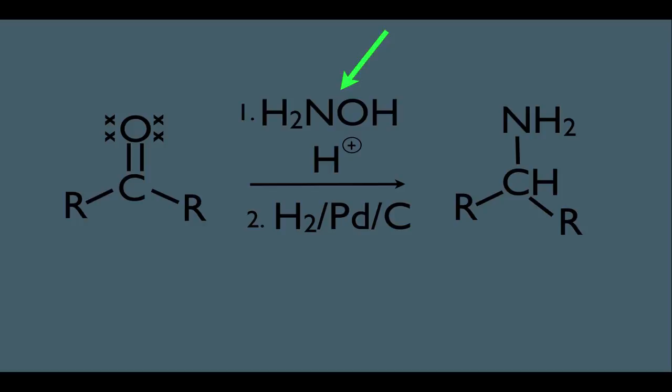Also, while we're looking at this, let's talk about our quick product method. In this reaction, all you're doing is taking the carbonyl group, the C double bond O, and turning it into a C directly bonded to an amine.